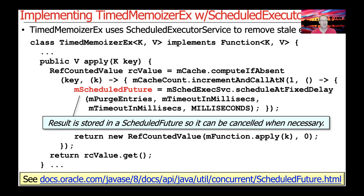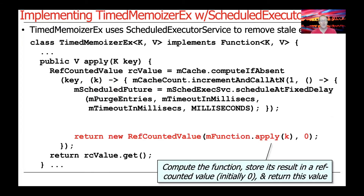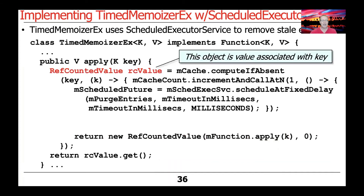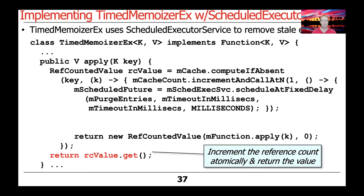What we get back from this call is mScheduledFuture, which we store in a field so we can cancel it if the number of elements in the map drops from one to zero. We then create a new RefCountedValue by applying the function, storing it with an initial ref count of zero. Then the RefCountedValue's get method is called, which increments the ref count atomically and returns the value — setting the ref count to one, which mPurgeEntries will later use to decide whether something has become stale.